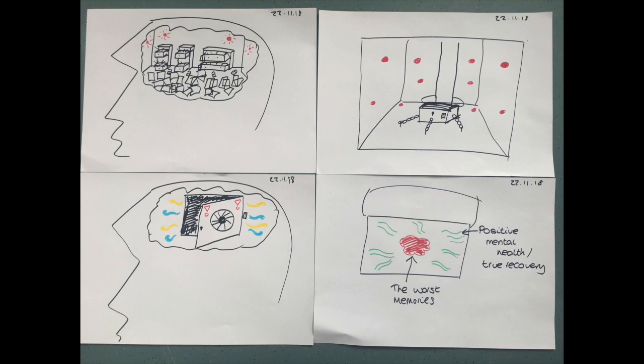Then the third picture, top right, is a box being held down by a metal pole and chained to the floor with alarms. And that's the things I don't want to think about or can't think about. And then the bottom right picture is what is in that box and what I need to access in order to get better.